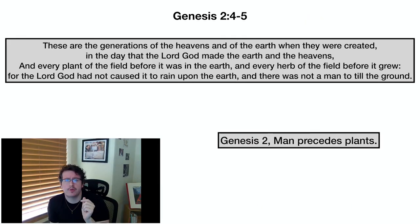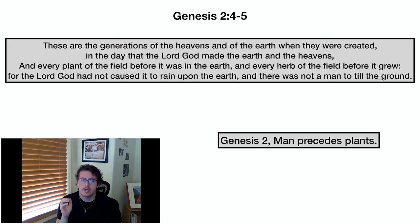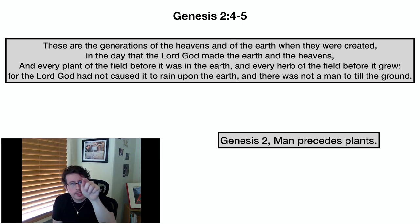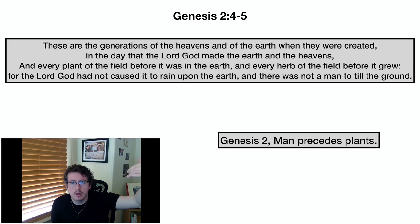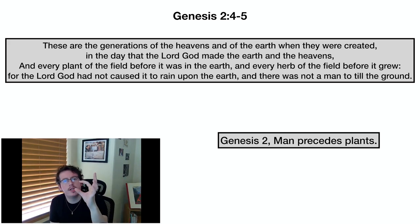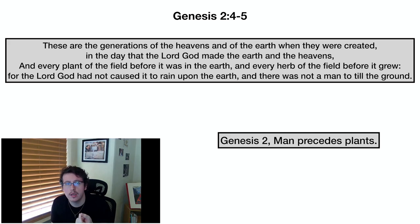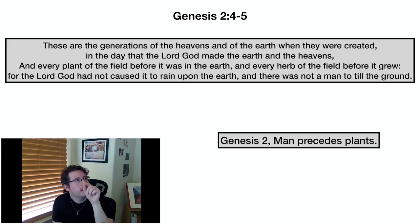Here's a passage from the next chapter of Genesis: "These are the generations of the heavens and of the earth when they were created. And the day that the Lord God made the earth and the heavens, and every plant of the field before it was in the earth, and every herb of the field before it grew. For the Lord God had not caused it to rain upon the earth, and there was not a man to till the ground." The important part: this says that man must come before plants. But that's not the pattern in Genesis 1. So what it's saying is the literal interpretation is not the correct way to view Genesis 1.